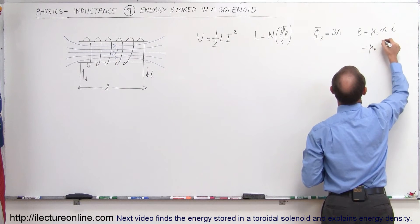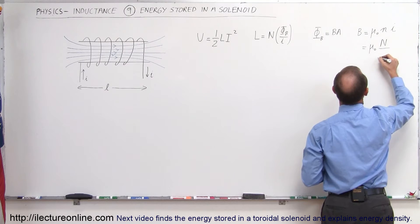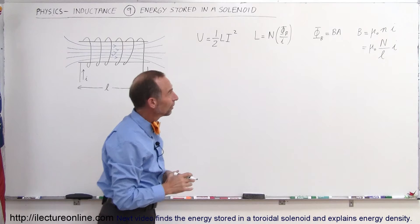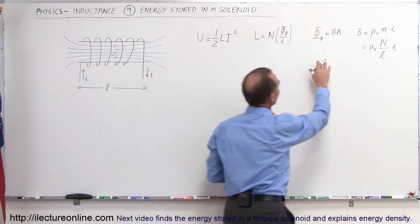All right, now we can put all that together. So that means that the magnetic flux here can be written as B times A, which means it's equal to mu sub-naught times the number of loops times I times A, can't forget the A, divided by the length of the solenoid.